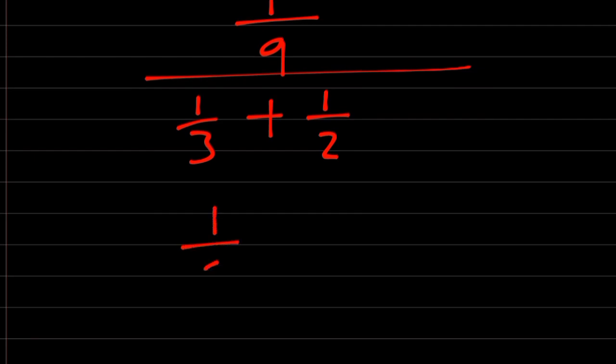We have 1/9 divided by... The LCM of 3 and 2 is 6. 3 goes into 6 twice, 2 times 1 is 2. Plus, 2 goes into 6 three times, 3 times 1 is 3.